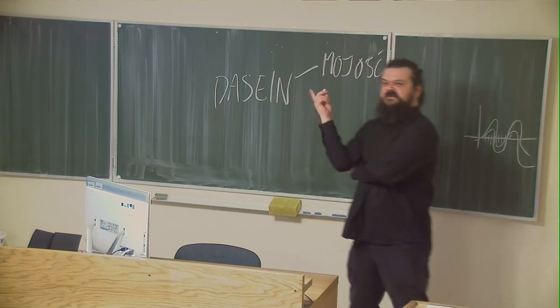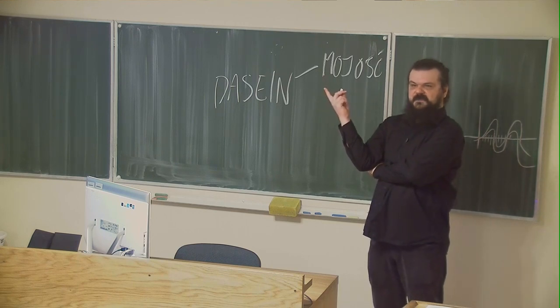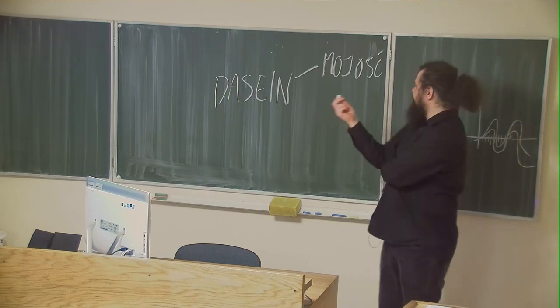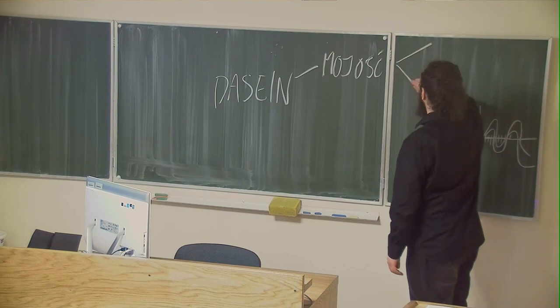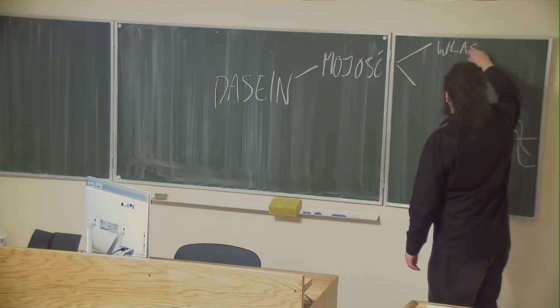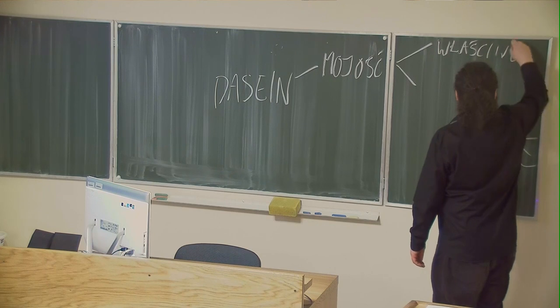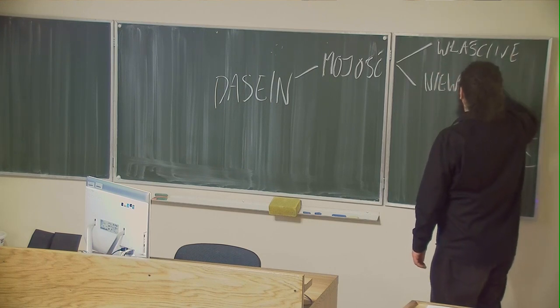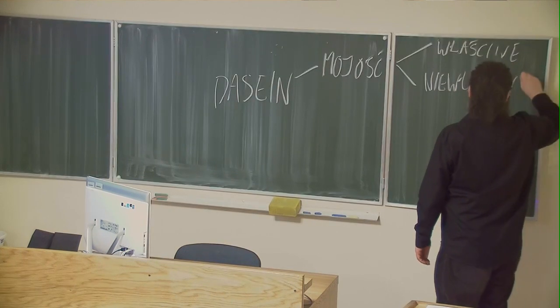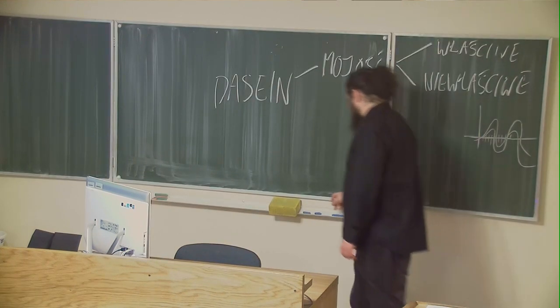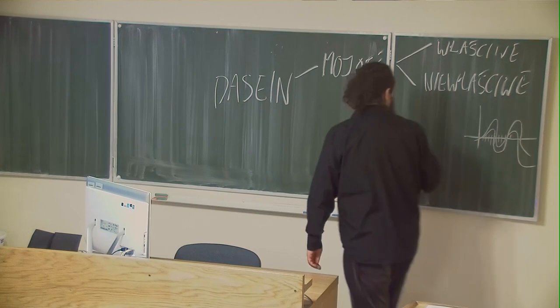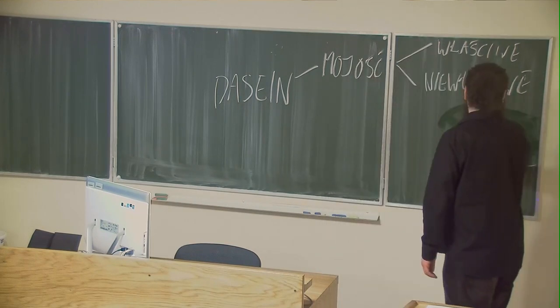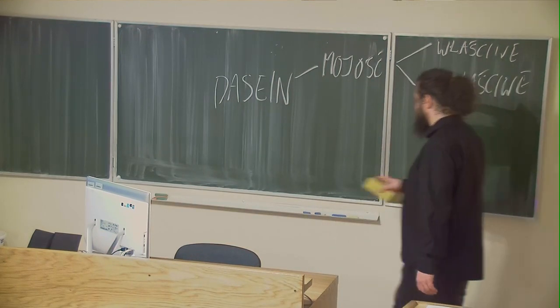Mineness, because being is always mine. Because being is always mine, it can be authentic or inauthentic. And now with regard to the topic of our lecture, it should be immediately added that this authentic, inauthentic - authenticity, inauthenticity, that is Eigentlichkeit, Uneigentlichkeit - these are not determinations which Heidegger would use in an evaluating way.